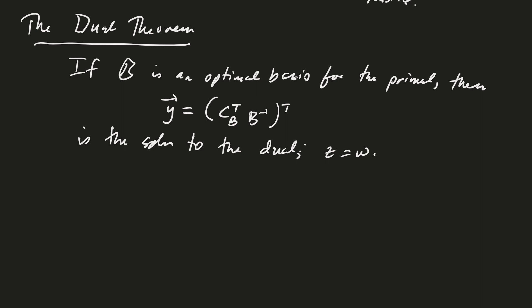How would we prove this? Proof: We need two things. A, y is feasible, and B, z equals w. And so if these two things are true, then by strong duality, we have optimal solution. So that's the outline of our proof.